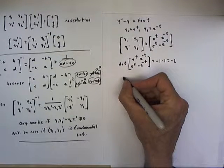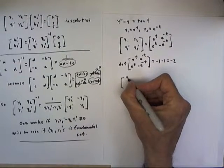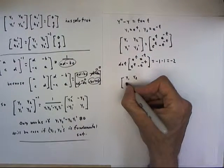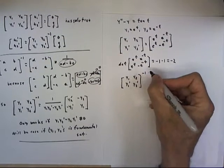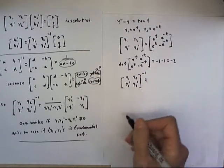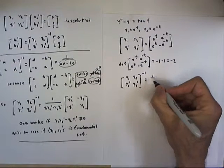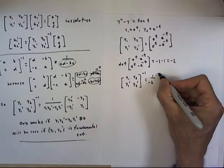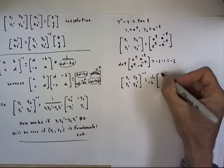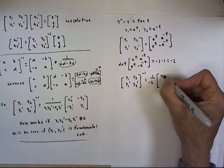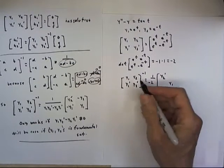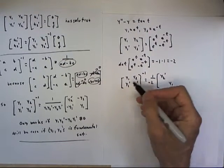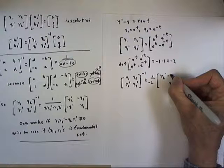The inverse of our matrix is then going to be 1 over our determinant times the matrix we get when we switch y1 with y2 prime. And then leave these where they are but make them both negative.